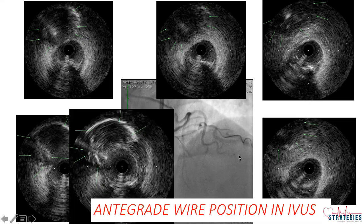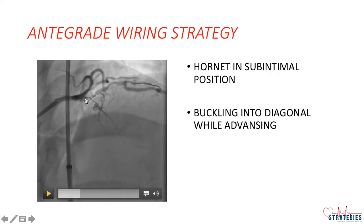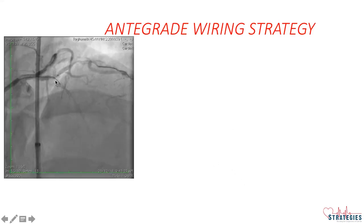I decided to shift to another drilling wire with good torque control to redirect the wire. I took off the Hornet wire and took a Gaia wire. The problem with the Hornet wire in this case was that while drilling, it was buckling into the diagonal, so this buckling prevented torque to redirect the wire. That is why I shifted to the Gaia wire — it is a drilling wire with good tip control.